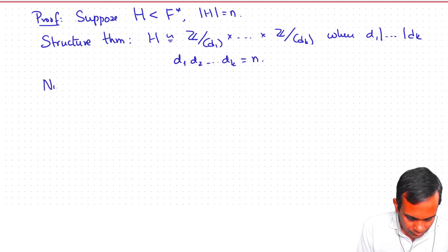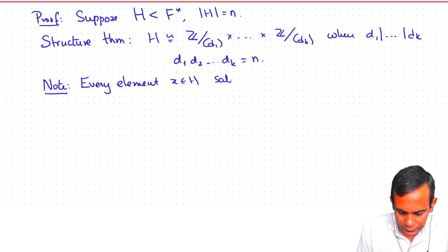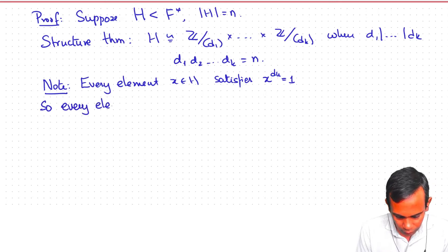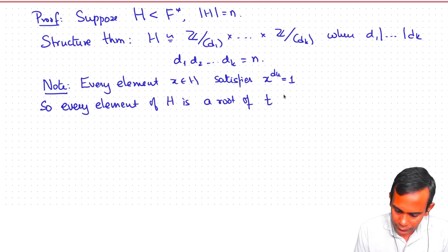Now, note that every element of H satisfies x to the power dk is equal to 1, because the order of each of these cyclic groups divides dk. And so, what we have is that every element of H is a root of the polynomial t to the power dk minus 1. But this polynomial can have at most dk many roots because it is of degree dk.